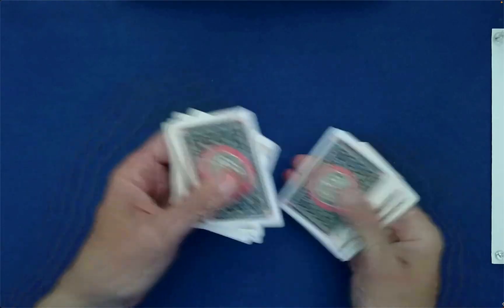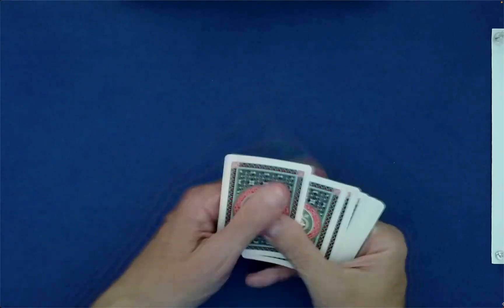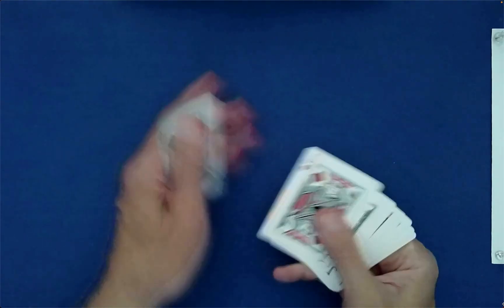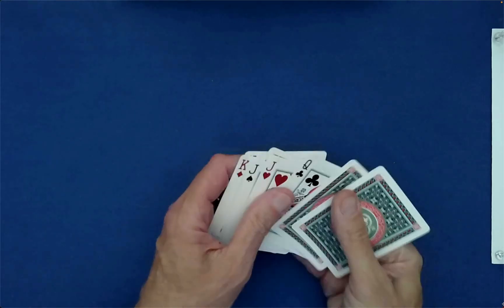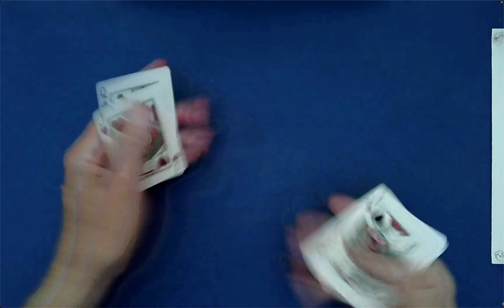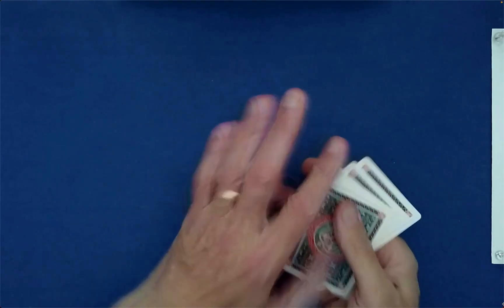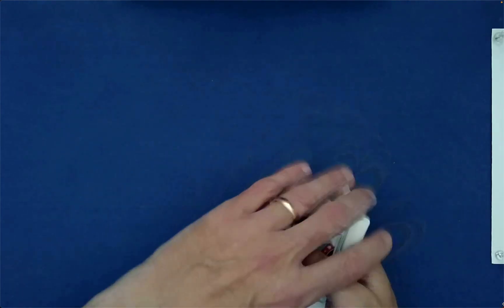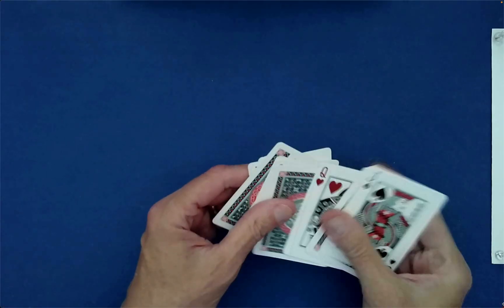Another great shuffle is called the super cut. What you do here is you count off any number - if you were here you could tell me two, three, five, whatever number you would like. Maybe one more, okay. And then I just go into a Charlia shuffle from there. If you want three: one, two, three. If you want five: one, two, three, four, five.